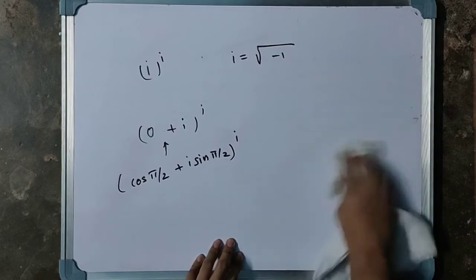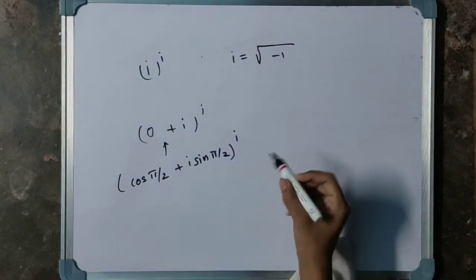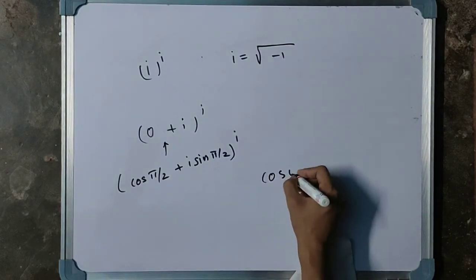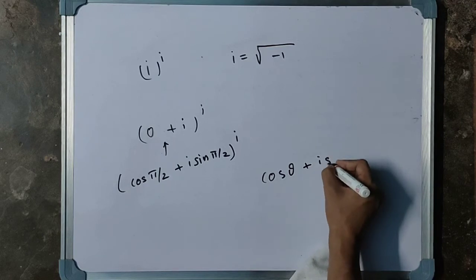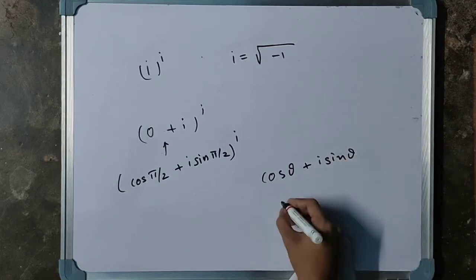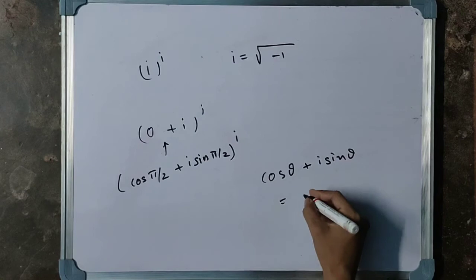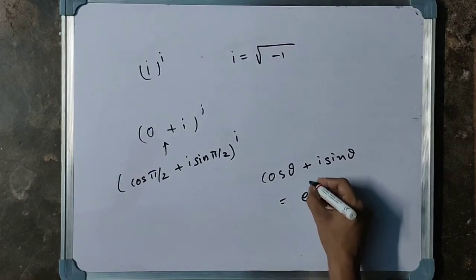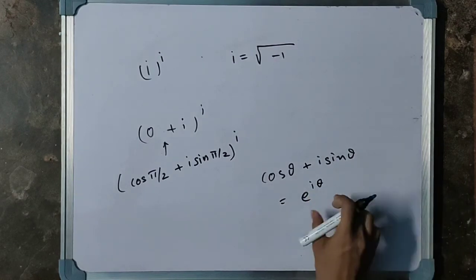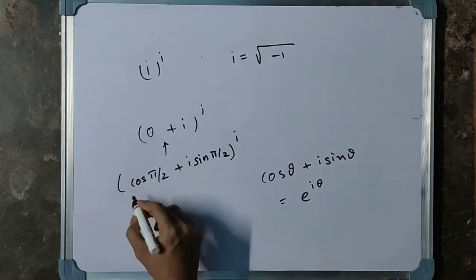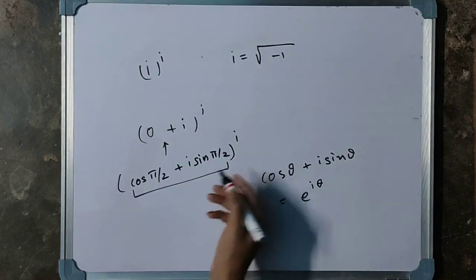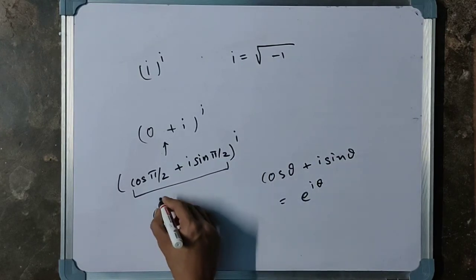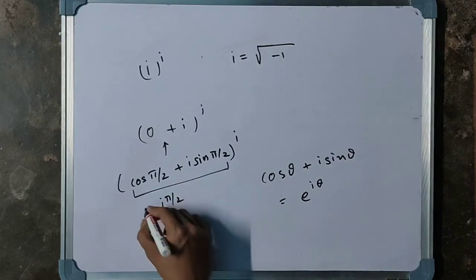Now, we all know one formula: cos θ + i sin θ equals e to the power i θ. That means this term becomes e to the power i π/2.